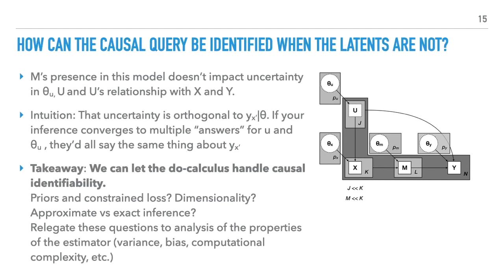So how can the causal query be identified when the latents are not? We've only added M to this model, but M's addition doesn't impact our uncertainty about theta or U and its relationship with X and Y. The intuition is that this uncertainty is orthogonal to Y sub x prime, meaning no matter what answer about U the algorithm converges on, those answers will all say the same thing about Y sub x prime.